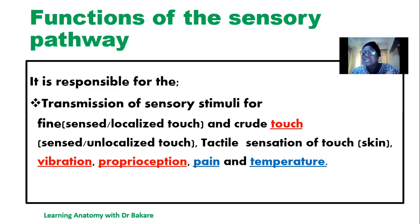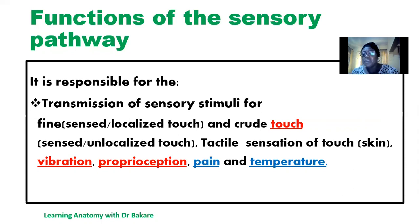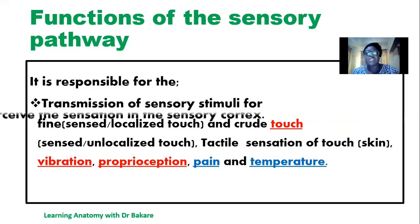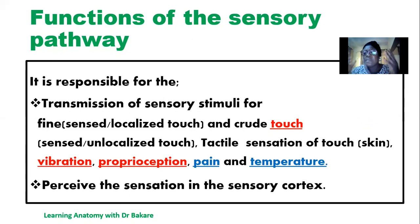We also have tactile sensation, which are basically touch sensations on the skin, or vibration. We also talk about proprioception, which is the perception of the body in space or the sensation of the change in position of the body. And also pain and change in temperature, which can also be perceived through sensory innervation. All these stimuli are perceived on the sensory cortex, where the sensory information are processed, integrated, and perceived.